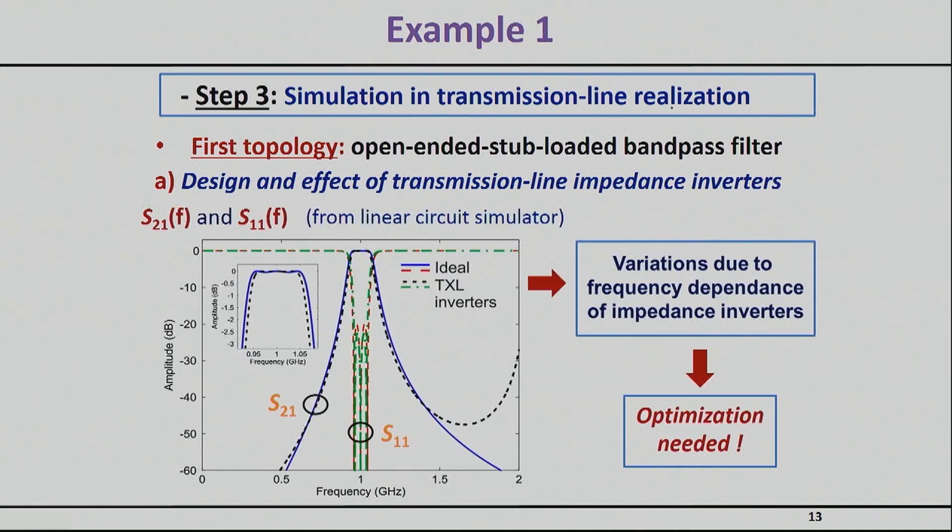So this is what I've done here. I've taken now the full circuit that you saw before simply replacing the ideal frequency independent inverters with the more realistic transmission line inverters that are lambda by 4. Once I do that, you can see essentially this black line which shows a new response.